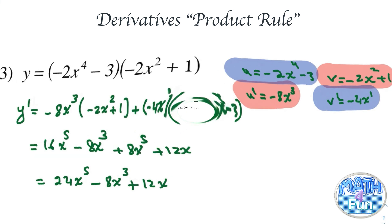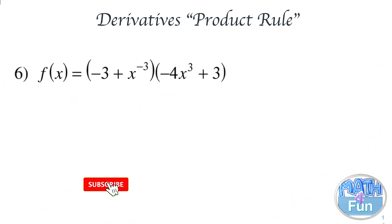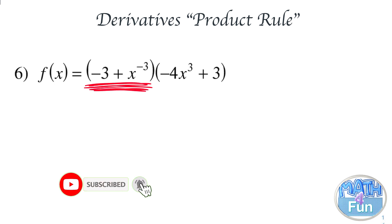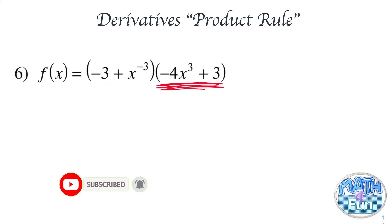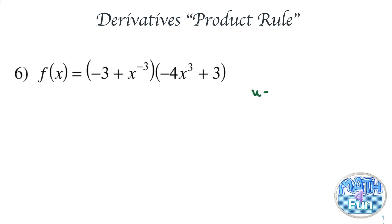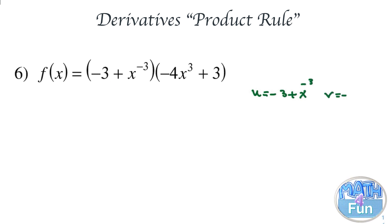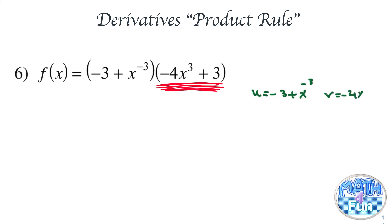Let's check another example. We have the function f of x equal to minus 3 plus x to the power negative 3, times minus 4x cubed plus 3. We set u equal to minus 3 plus x to the power negative 3, and v equal to minus 4x to the power 3 plus 3.